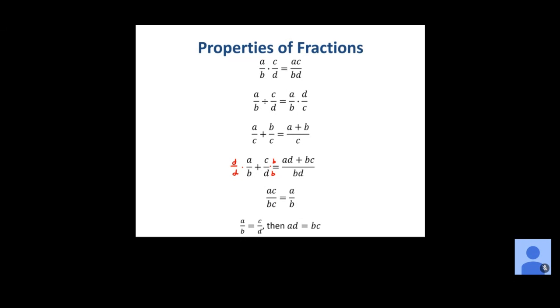If we have products with a common factor in the numerator and denominator — like a times c over b times c — that common factor of c cancels, simplifying to a over b. The last property uses cross multiplication to solve a proportion: multiplying a times d and c times b gives the equation ad = bc.